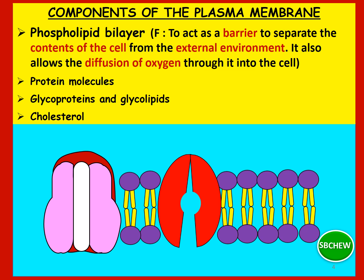In the last video, we discussed the phospholipid bilayer. The function was not stated, so here it is. The phospholipid bilayer acts as a barrier to separate the contents of the cell from the external environment. It also allows the diffusion of oxygen through it into the cell. So other than the phospholipid bilayer, we have protein molecules, glycoproteins, glycolipids, and cholesterol to discuss.